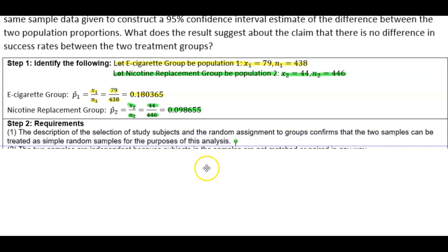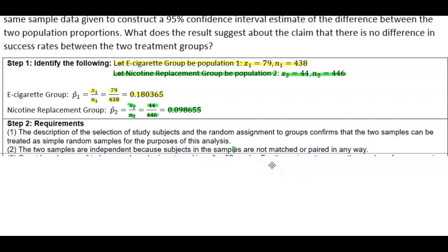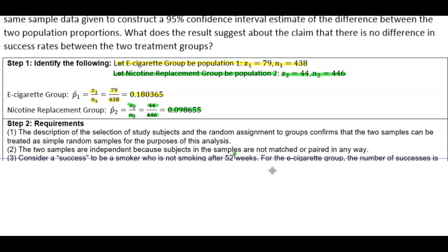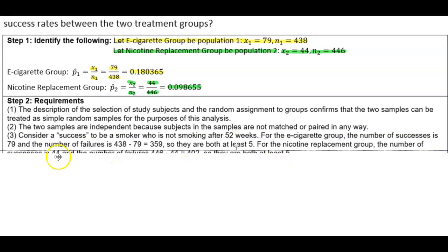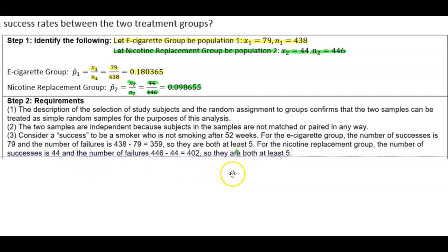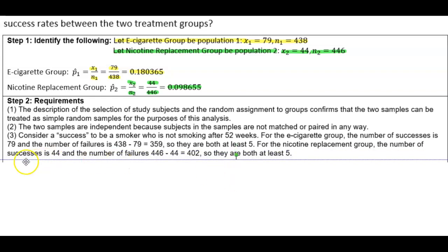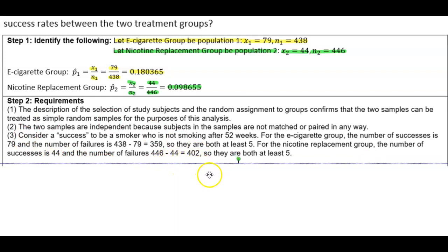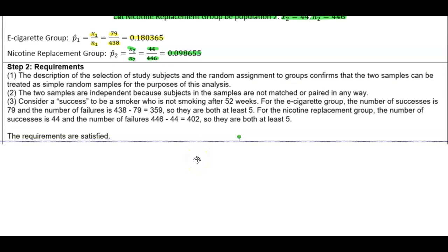Now the requirements. The description of the selection of study subjects and the random assignment to groups confirms that the two samples can be treated as simple random samples. Number two, the two samples are independent because subjects in the samples are not matched or paired in any way. Number three, considering a success to be a smoker who is not smoking after 52 weeks: for the E-Cigarette Group, successes = 79 and failures = 359, both at least five. For the Nicotine Replacement Group, successes = 44 and failures = 402, both at least five. Therefore, the requirements are satisfied.